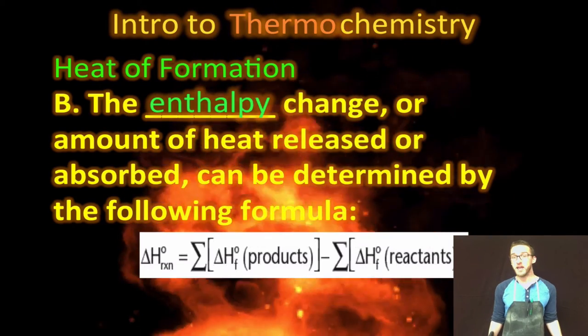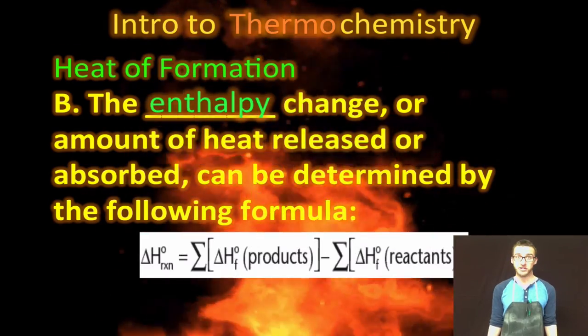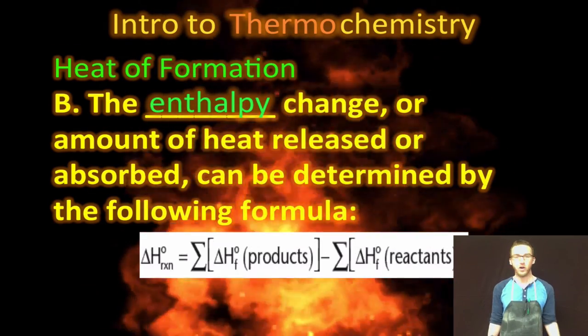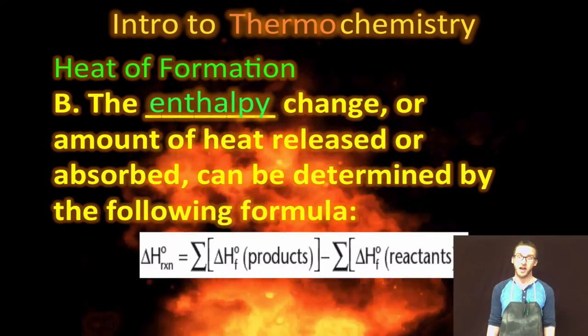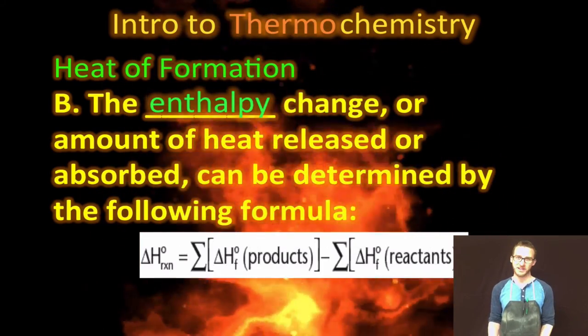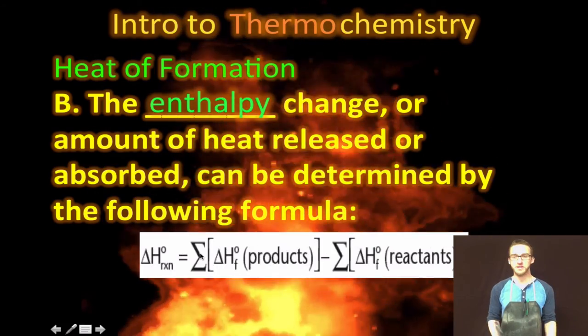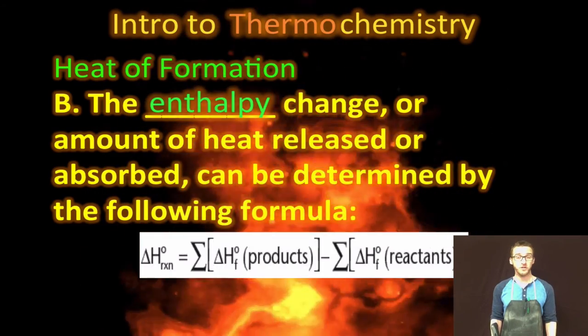To determine the enthalpy change of a reaction from the heats of formation, then all you have to do is sum together all the heats of formation of the products and subtract the sum of all the heats of formation of the reactants. Take a moment to examine this formula. You've got it not only in your notes, but also on your formula chart. Let's take a quick look at an example of how we use the heats of formation to determine the overall enthalpy change for a reaction.